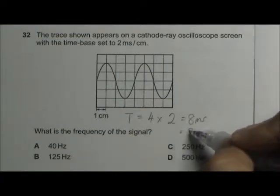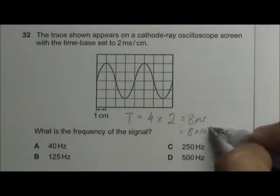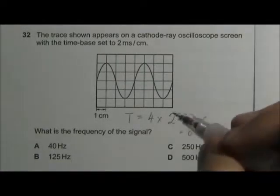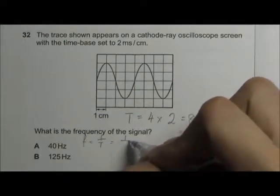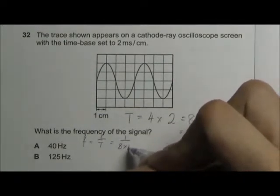8 milliseconds will be 8 times 10 to the power of negative 3. To find the frequency, frequency equals 1 over period, which will be 1 divided by 8 times 10 to the power of negative 3. This gives us 125 hertz, answer B.